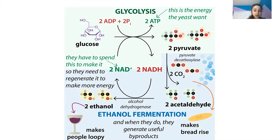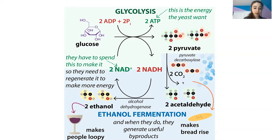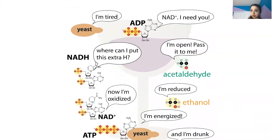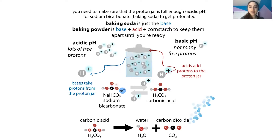Fermentation happens when yeast make energy anaerobically — without oxygen — in a different way than our bodies do. This process produces CO2 gas. A similar process takes place in wine, and because fermentation also makes ethanol, that is why wine makes you drunk. There are also chemical leavening agents, like baking soda and baking powder, which use an acid-base reaction.